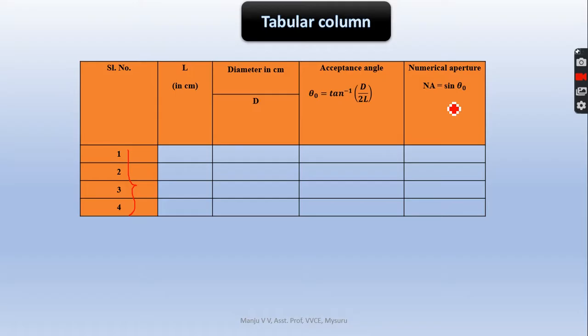Numerical aperture is the light gathering capability of an optical fiber. It is the sine of the angle of acceptance. Take the angle of acceptance you got from here, and take the sine of that, and you will get numerical aperture for all 4 readings.